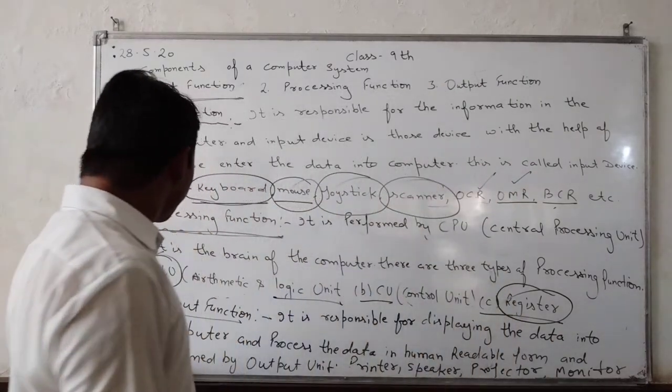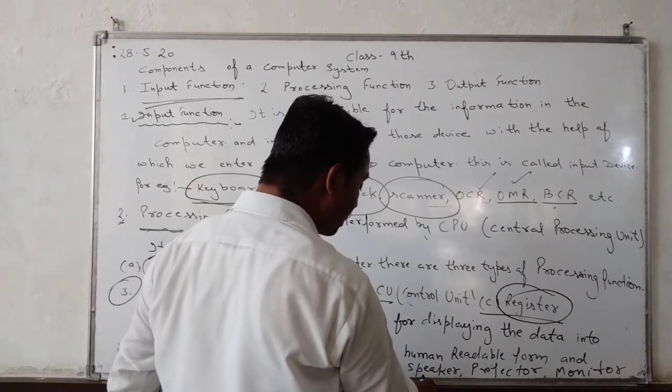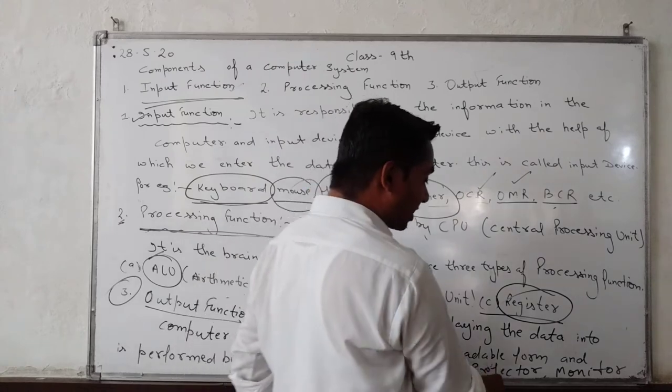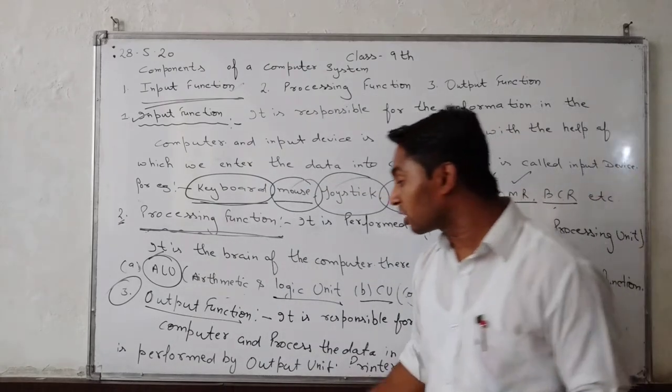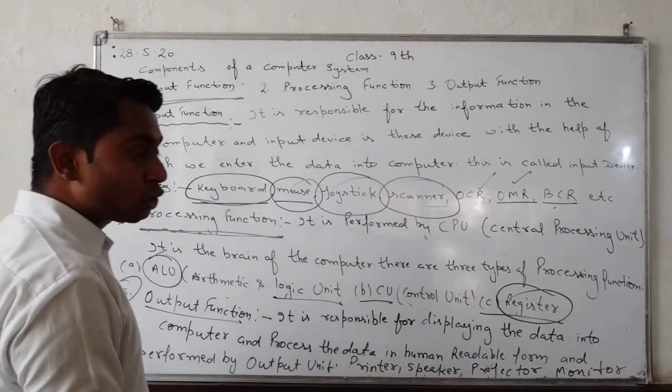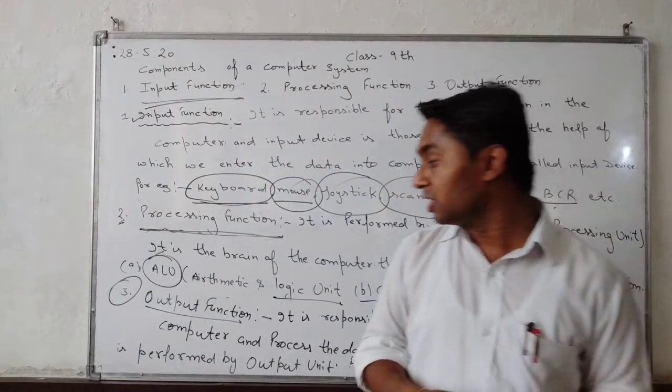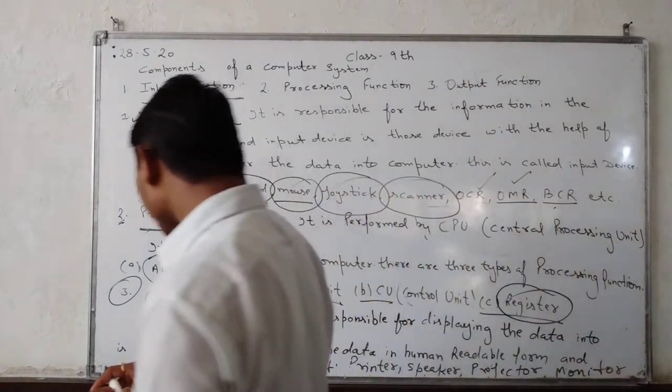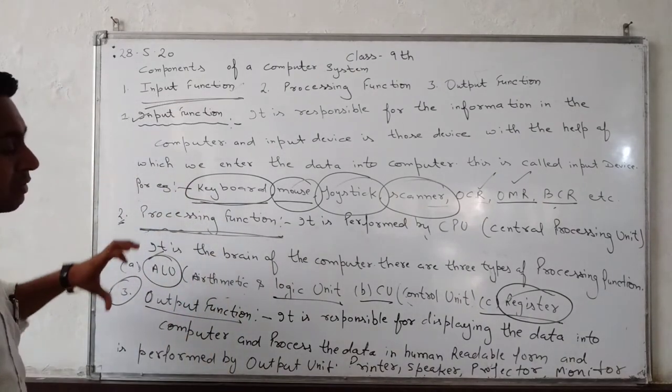And it is performed by output unit. For example, printer, speaker, projector, monitor. What is output device? Output device is those device with the help of which we get the information on the computer.